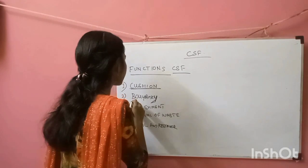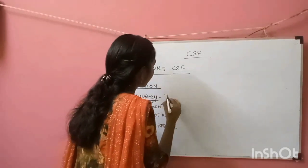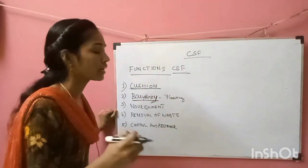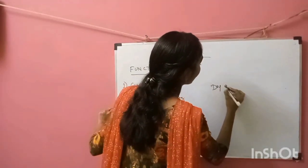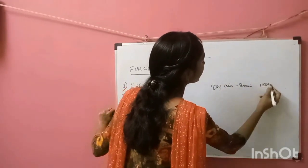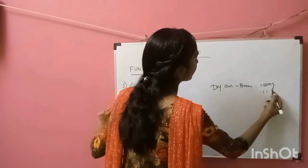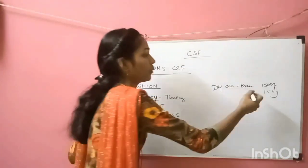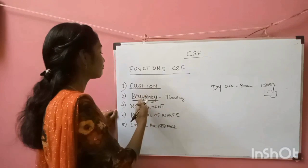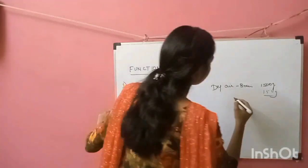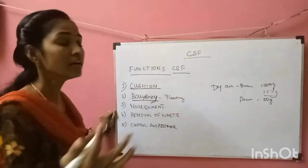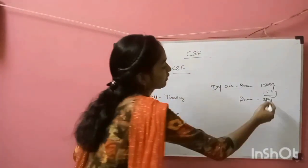Second is buoyancy — the floating tendency. The CSF makes our brain float. In dry air, the weight of our brain is about 1500 grams, that is 1.5 kg. But due to its floating tendency — buoyancy — the brain effectively weighs about 50 grams when it floats in the CSF.